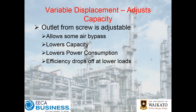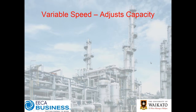Variable displacement compressors have an adjustable outlet from the screw which effectively changes the capacity of the unit, which can lower your power consumption. At very, very low turn-downs, the efficiency does start to drop off. However, they can be quite an efficient unit.